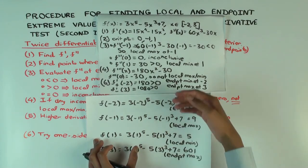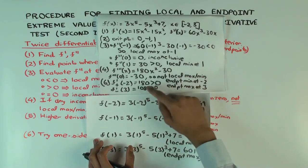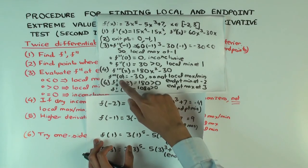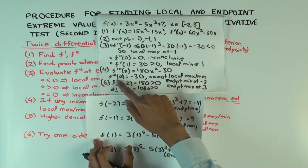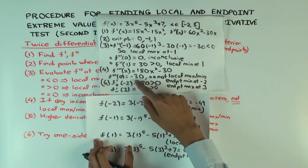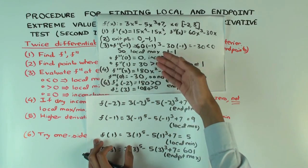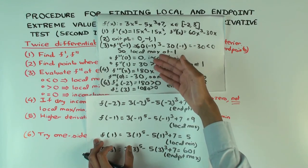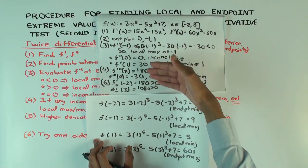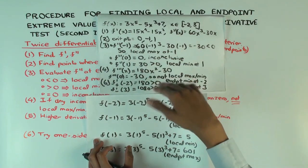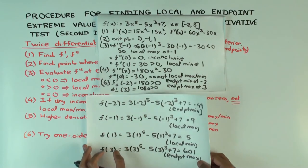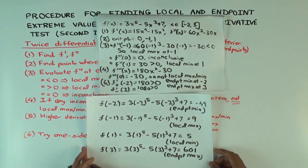If you had a situation where f'''(0) were also zero — that is, a critical point where both f double prime and f triple prime vanish — then you would need to take the fourth derivative and keep going in the same manner.